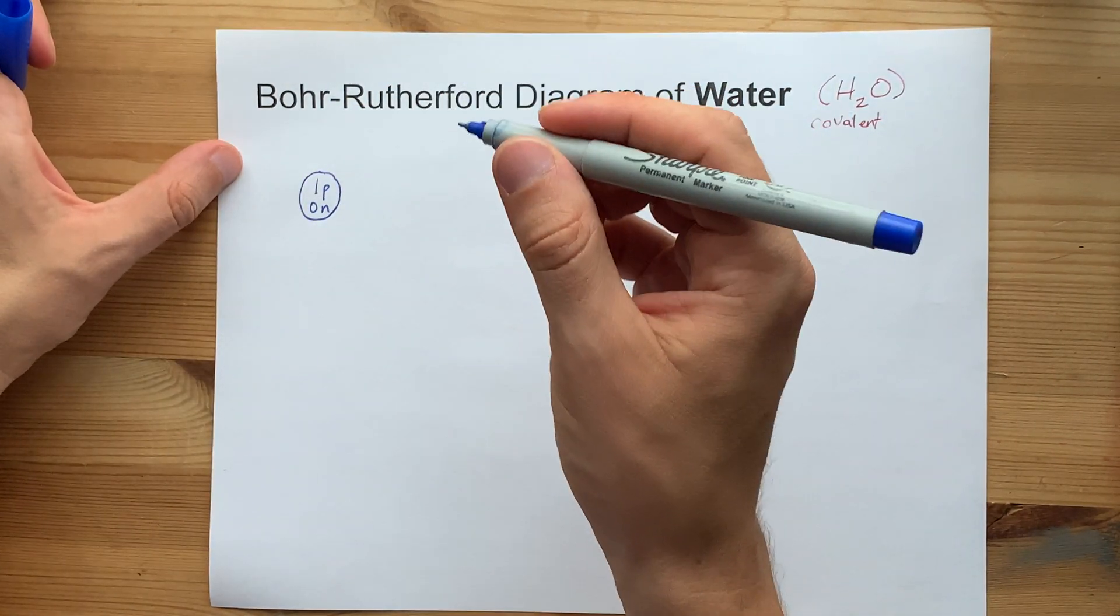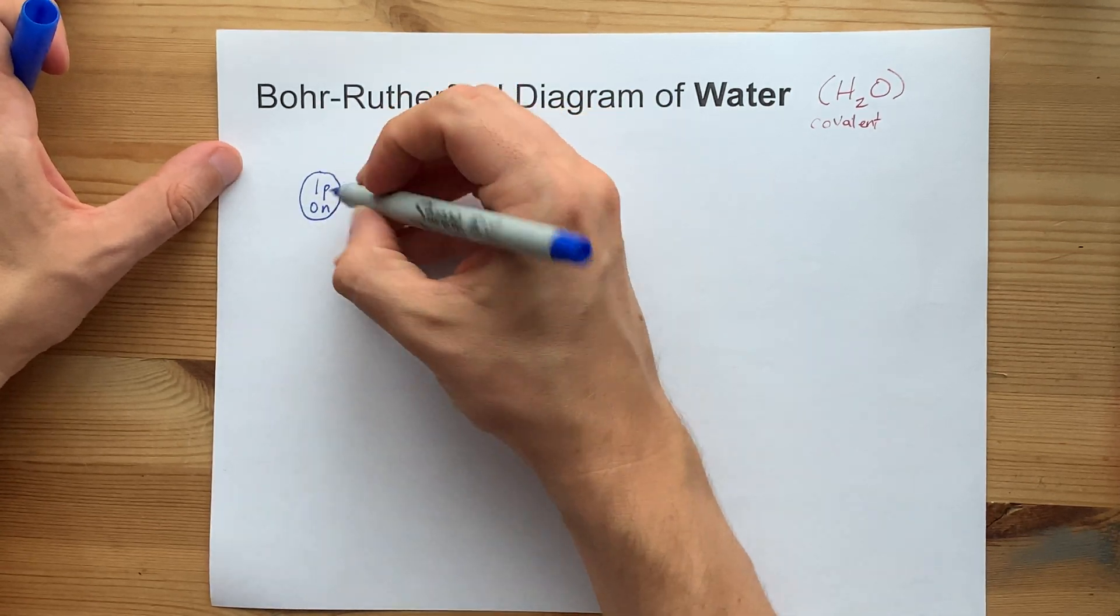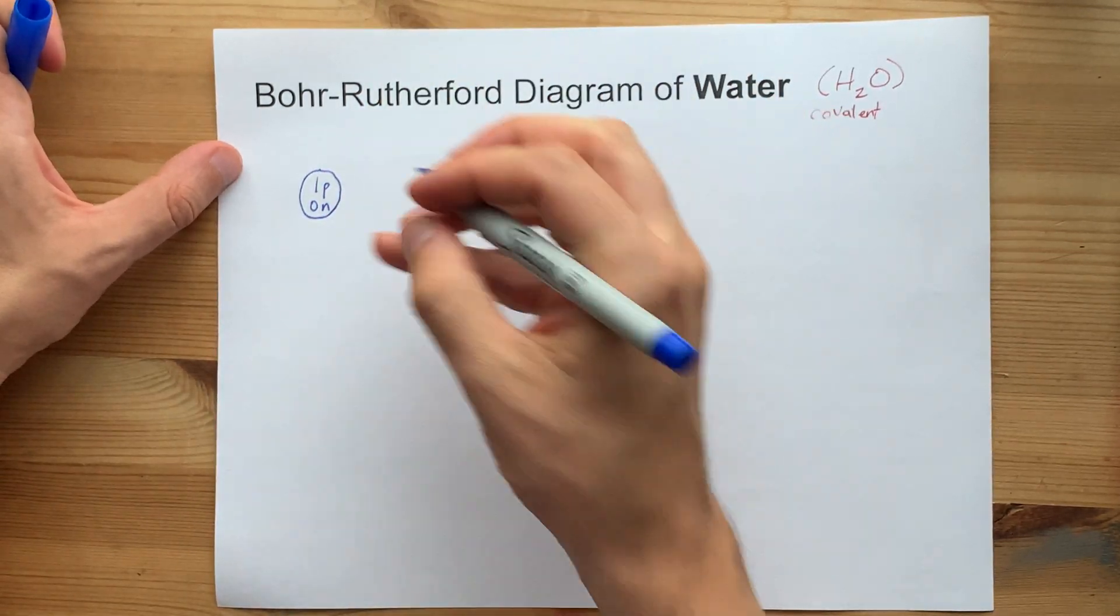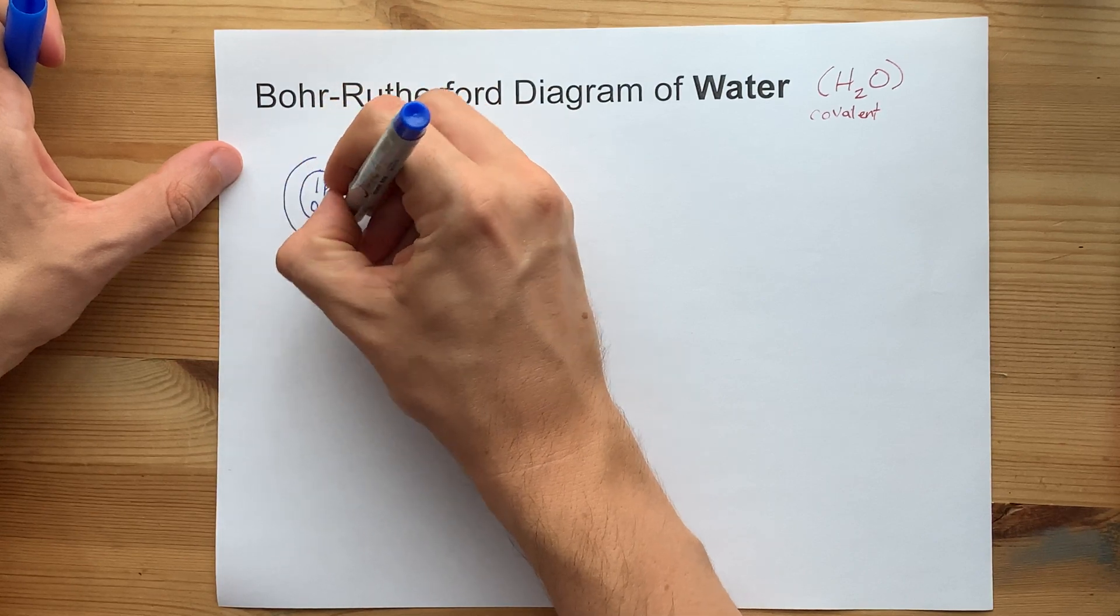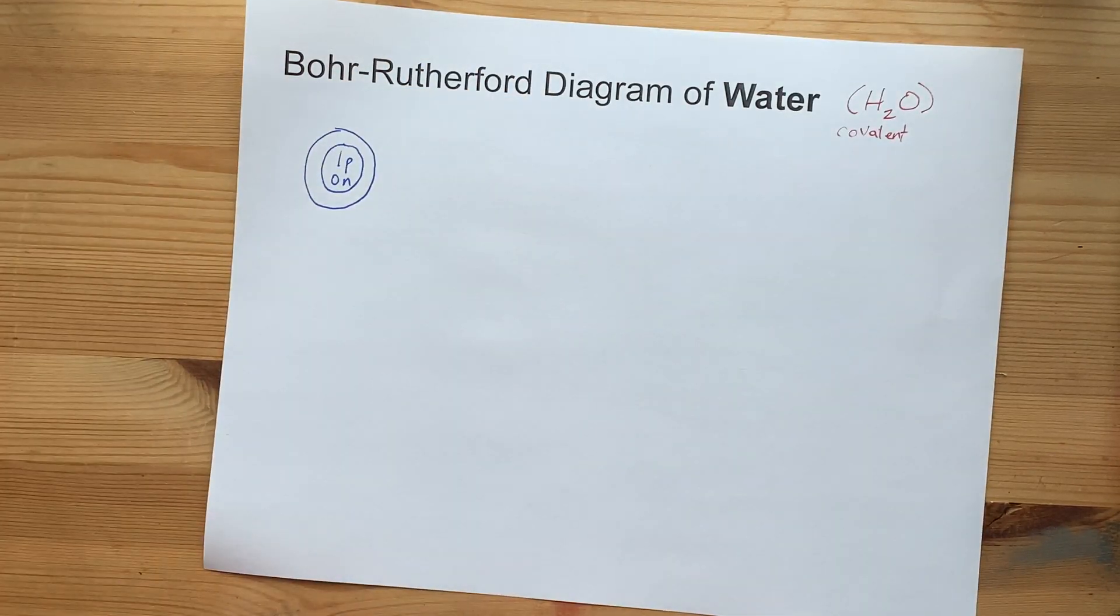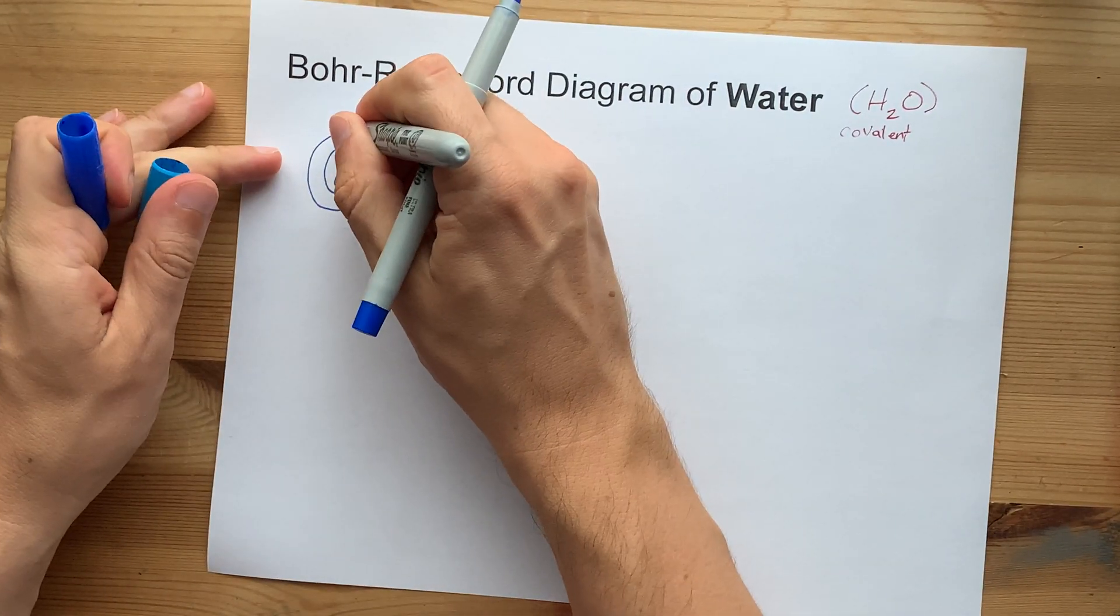Anyways, one proton, zero neutrons. This here is just the nucleus. Then you need, in this case, one electron, because the atomic number is one, in the first shell. So I'm going to draw that first shell, and I'm going to put one electron in it.